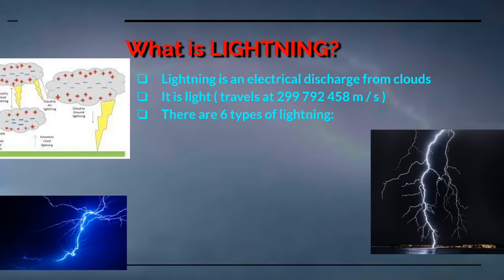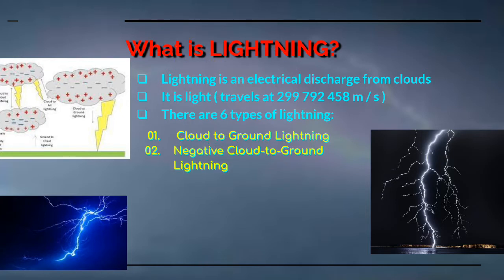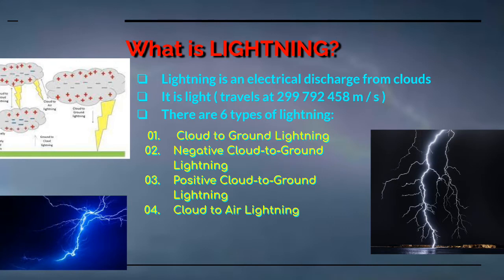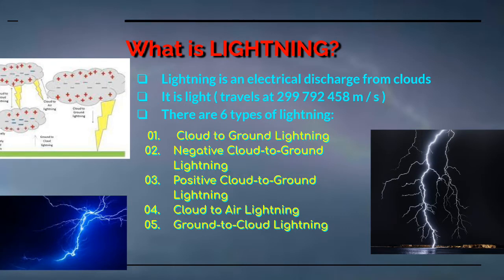There are six types of lightning. You have cloud to ground lightning, negative cloud to ground lightning, positive cloud to ground lightning, cloud to air lightning, ground to cloud lightning, and also intra-cloud lightning.